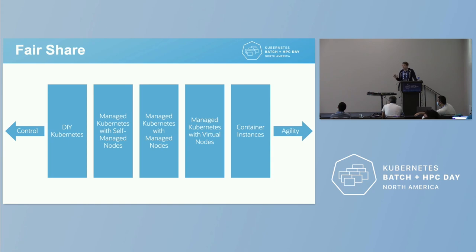The ultimate step — and I won't talk about this too much because we are at a Kubernetes conference — is to just abstract away the cluster altogether and use something like container instances or the AWS Elastic Container Service. These remove the Kubernetes API from the picture. They require you to do all of your own orchestration, but you can be very agile and just deploy your business logic without having to think about the cluster.